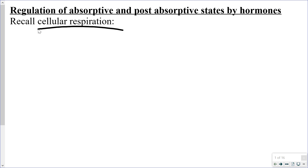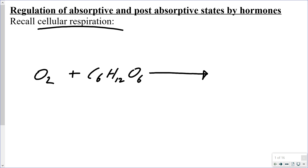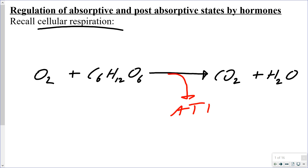Cellular respiration is what is taking place inside your cells. What your cells require is oxygen and glucose, and what they are producing is carbon dioxide and water. The overall purpose of this reaction is to make the usable form of energy — adenosine triphosphate, or ATP.